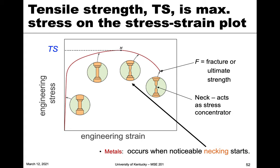The maximum on the curve is the absolute maximum stress value that the material can handle — but only after it has already plastically deformed or changed shape. That's how we define tensile strength, or TS. Sometimes you may see this as ultimate tensile stress, UTS, but it's all the same thing.